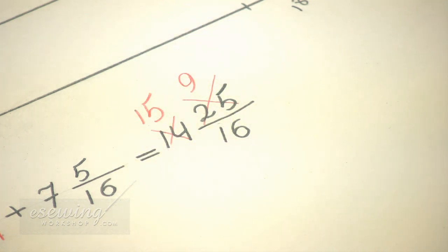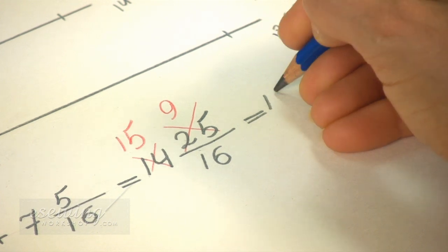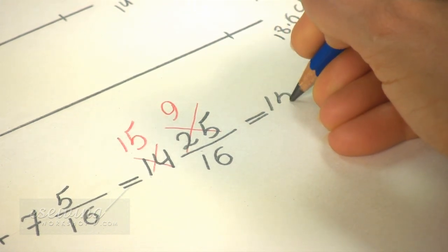If the denominator fits multiple times in the numerator, we need to deduct the denominator from the numerator multiple times until it is less than the denominator. For each time we do this we add 1 to the whole number. So the total is 15 and 9 sixteenths of an inch.